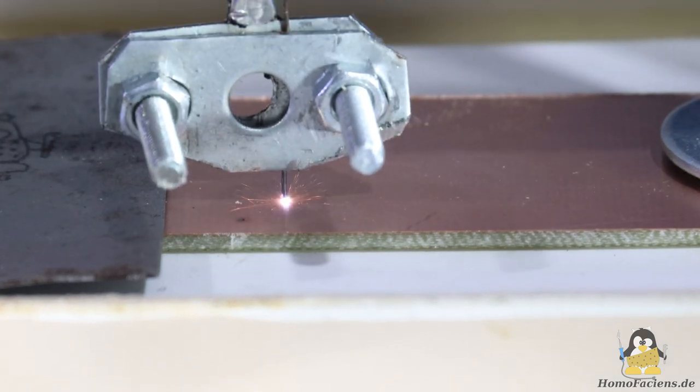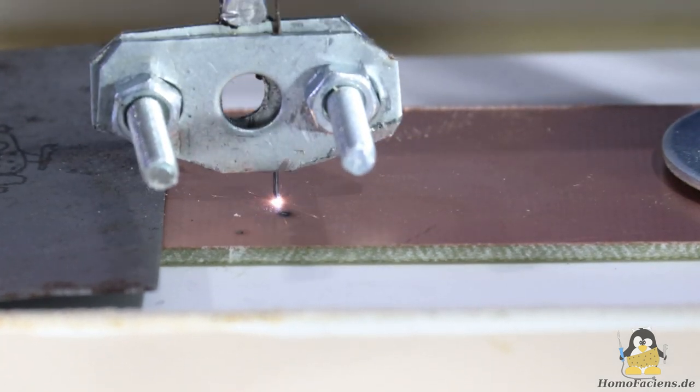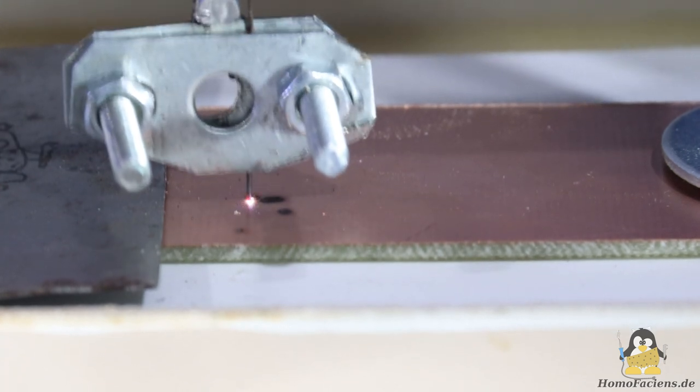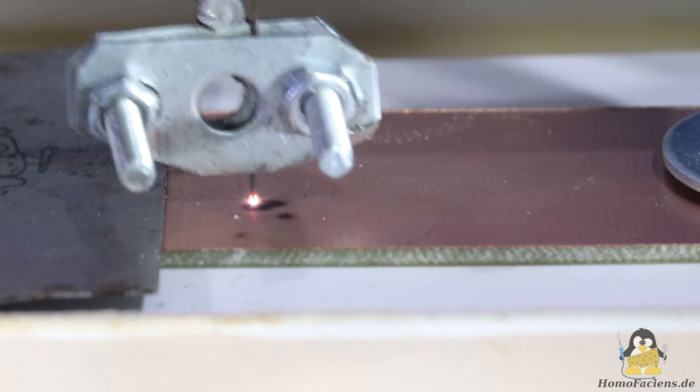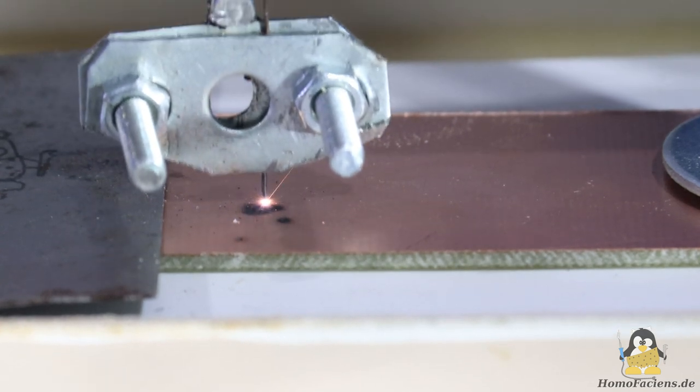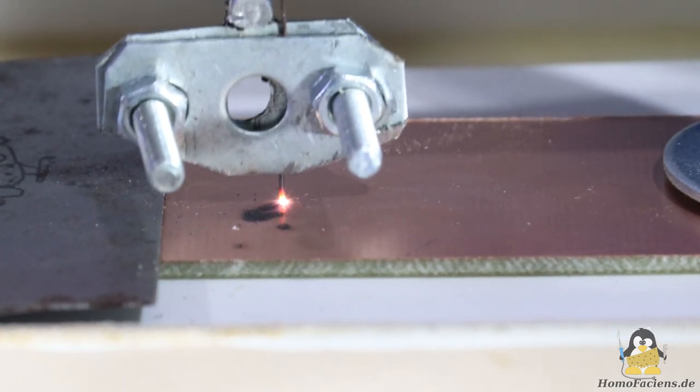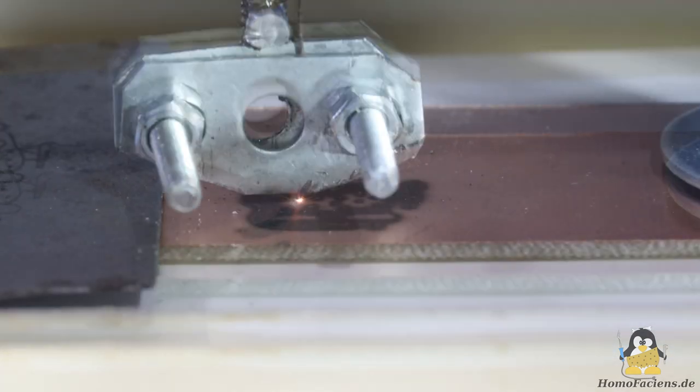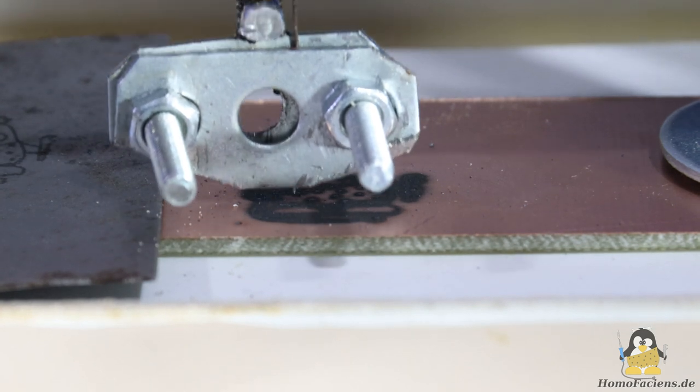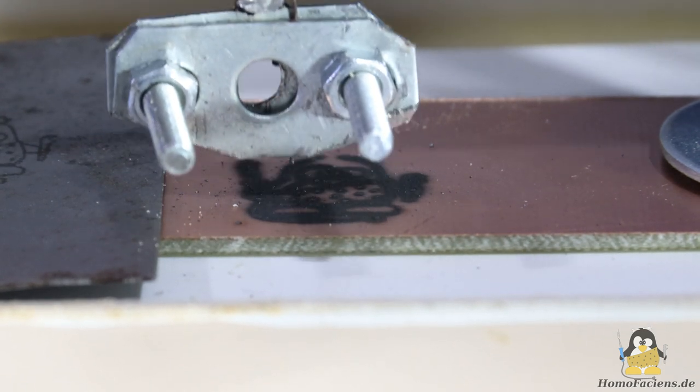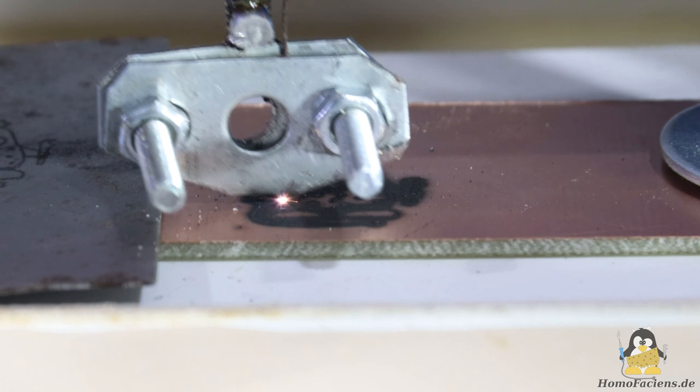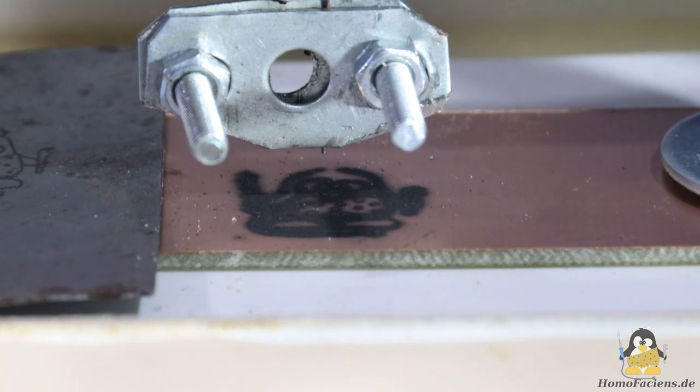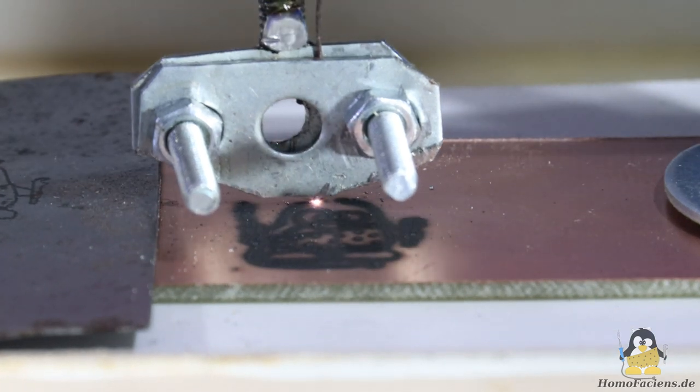What about other materials? Here I am engraving on a copper-plated circuit board. This also works very well, but the erosion of the steel wire is significantly higher, so I have to adjust the height of the Z-axis downwards by hand from time to time.